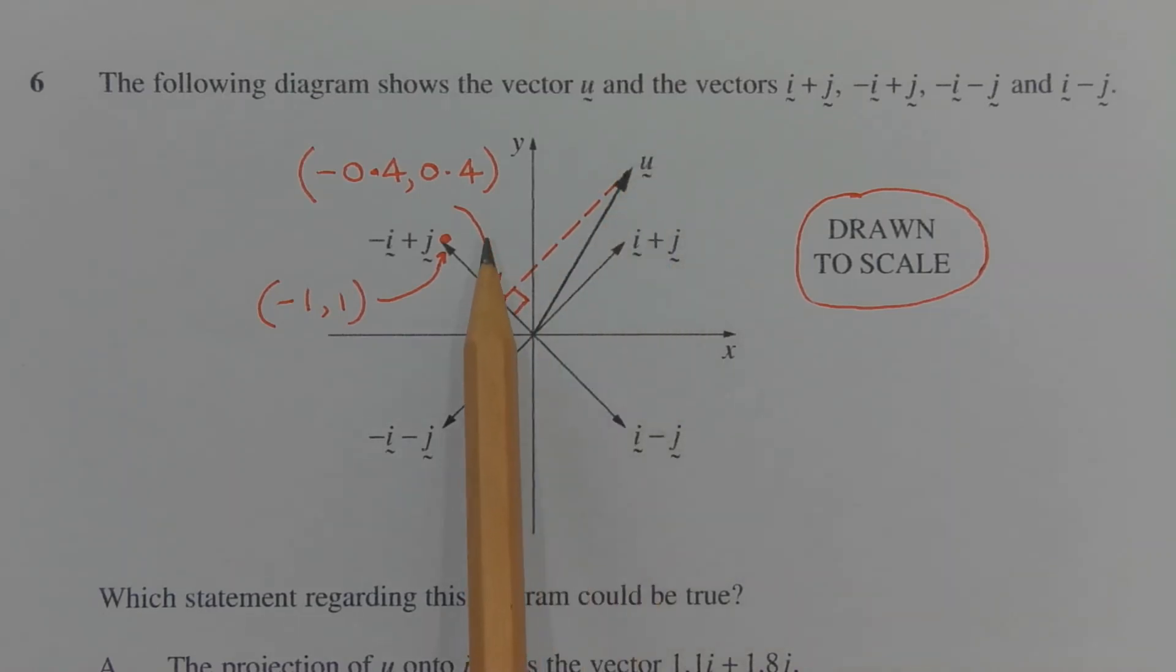Now looking at vector u and considering the four vectors - negative i plus j, negative i minus j, i minus j and i plus j - the most likely vector that u is projected onto is negative i plus j.